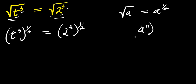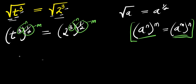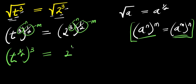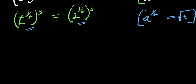Now, if you have a to the power of m raised to the power of n, this is the same as a to the power of m times n. Here, three represents our m and one over two represents our n. Applying that identity, we get t to the power of one over two raised to the power of three, equals two to the power of one over two raised to the power of three. Since a to the power of one over two is just the square root of a, we have square root of t raised to the power of three.